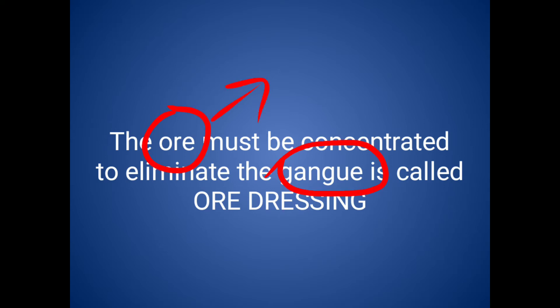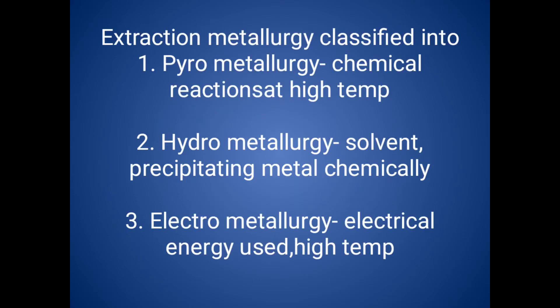We want only the pure metal — pure metal of iron or steel. So we eliminate the gangue using different processes. That process is called ore dressing.